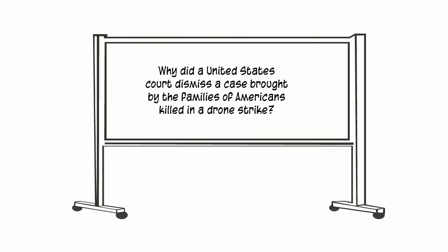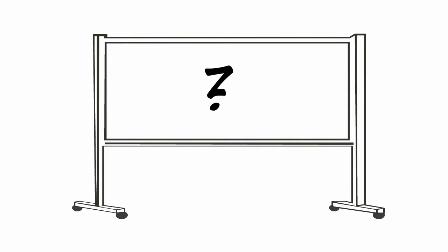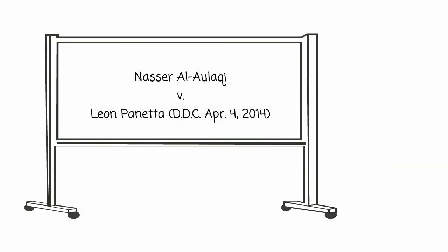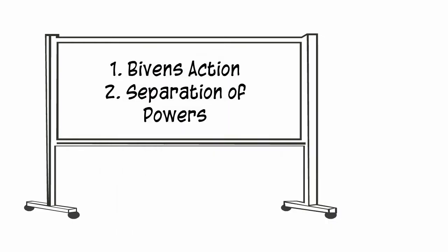Recently, a federal court in the United States dismissed a lawsuit brought by the families of three Americans who were killed overseas in drone strikes. In this video, we'll discuss why the court dismissed the case. The name of the case is Aulaki v. Panetta, and it was decided in April 2014 by a federal court in Washington, D.C. Understanding this case will help you understand what a Bivens action is and will also help you understand the principle of government separation of powers.